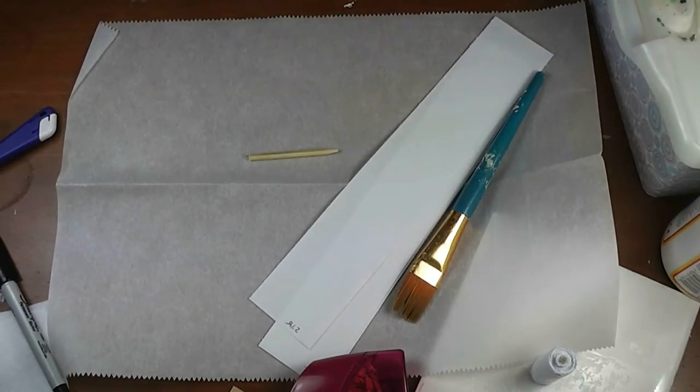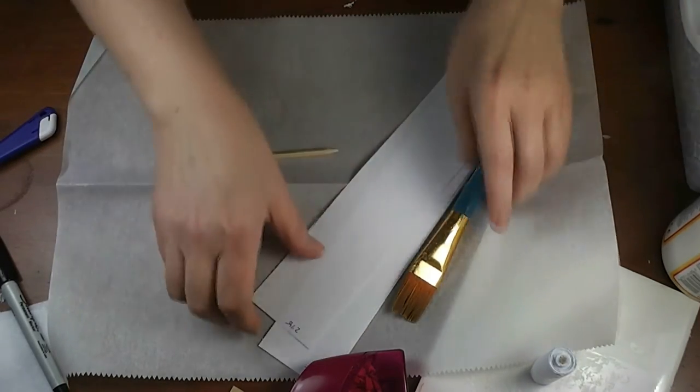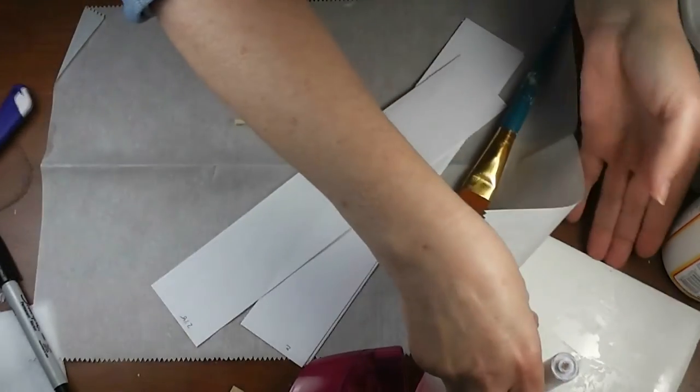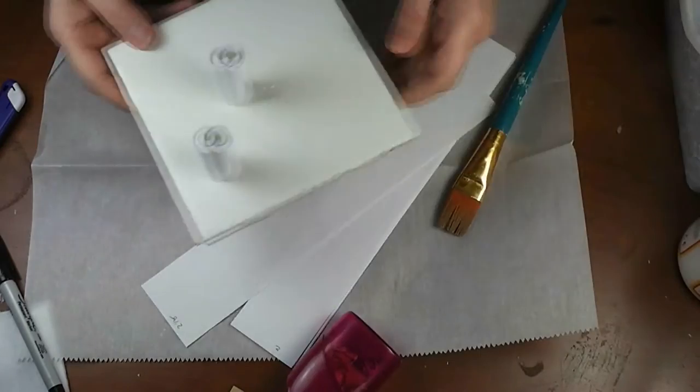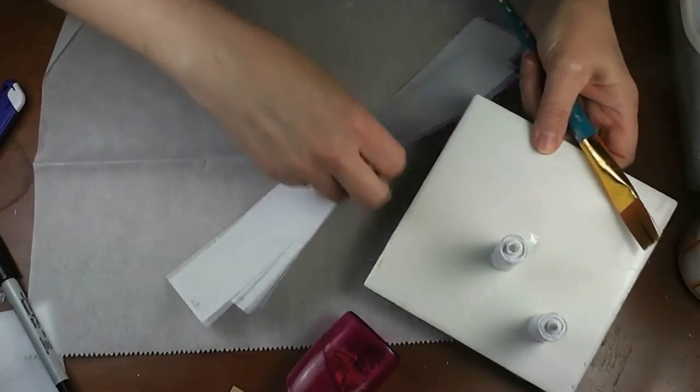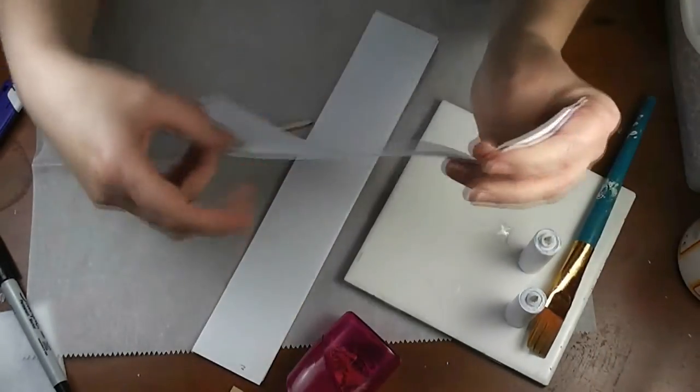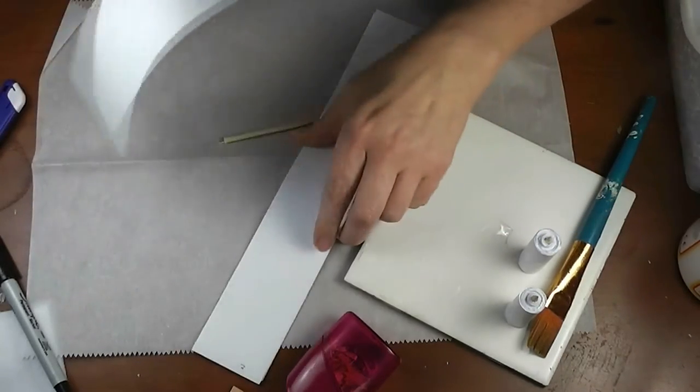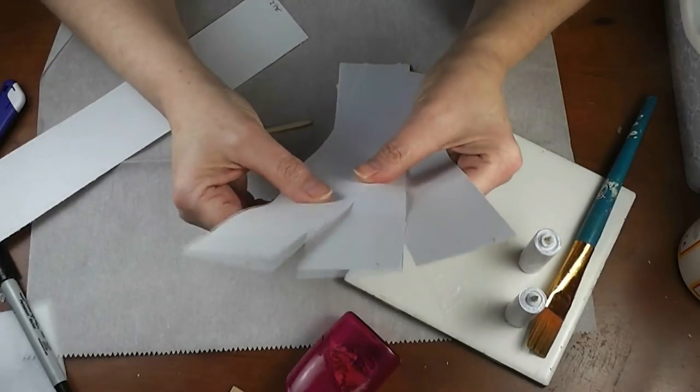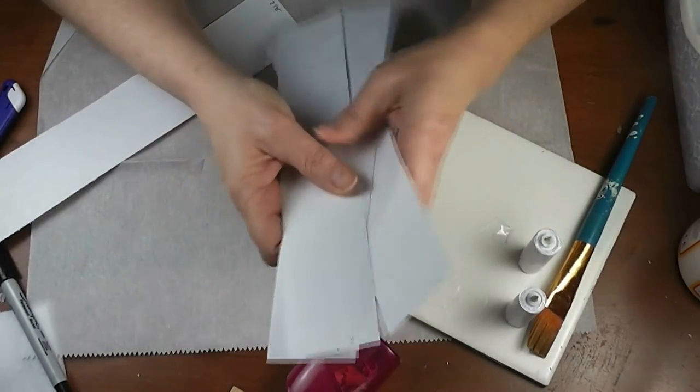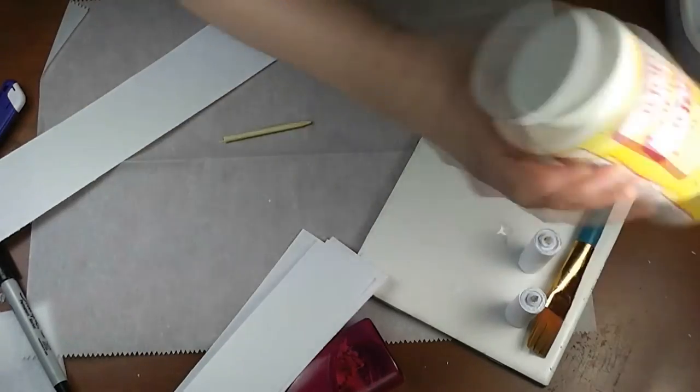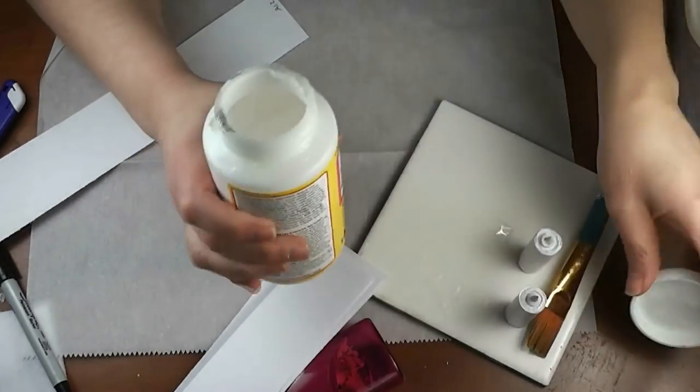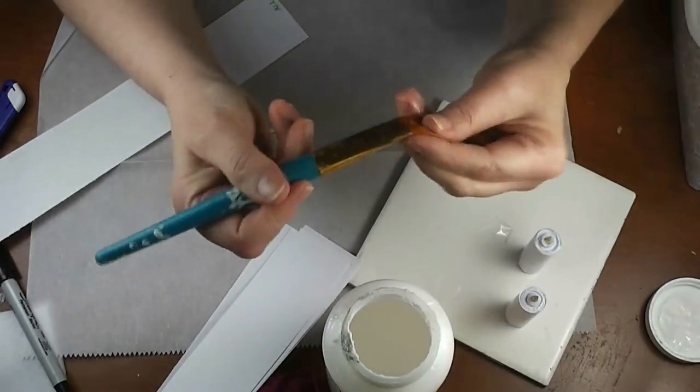The next thing we need are some strips of just regular printer paper or typing paper. We need one strip that's the length of the paper that's two and one-eighth inches wide, and then we need four of them that are two inches wide by the length of the paper. We need some Mod Podge or other glue that's compatible with paper and not too thick, and we need a brush to apply it.